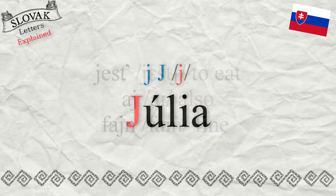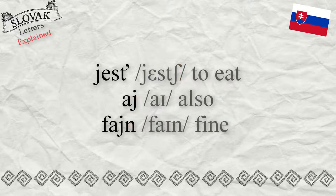Other examples with the letter J: 'to eat' is 'jesť'; 'also' is 'aj'; and 'fine' is 'fajn' — all with the Y sound for J.